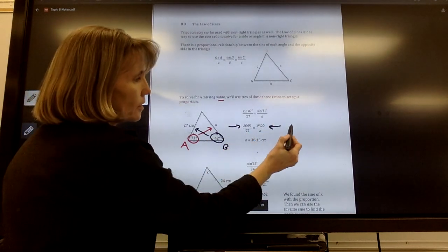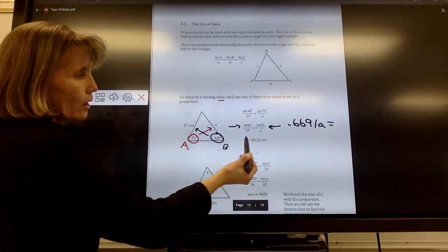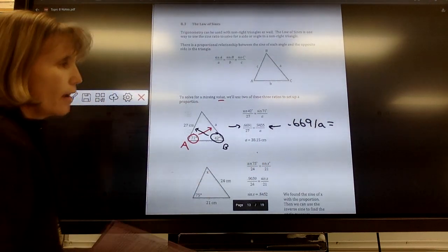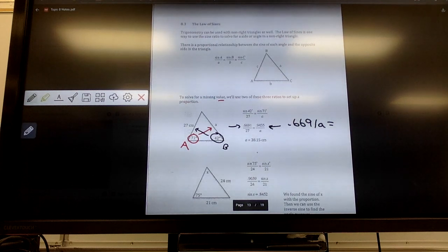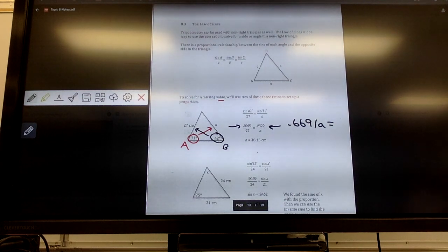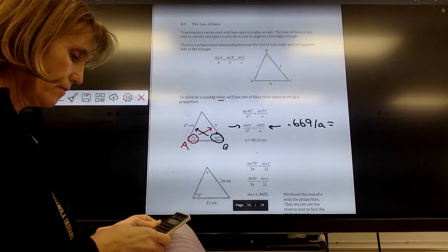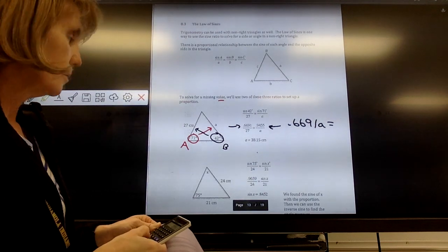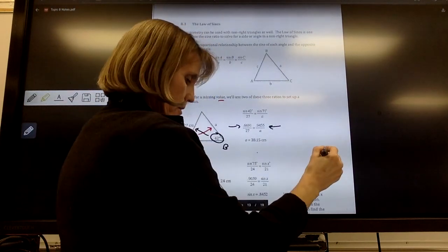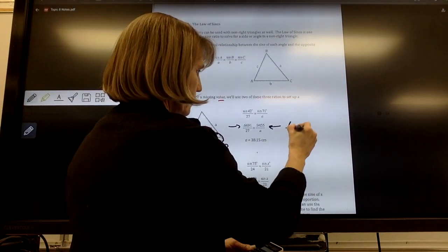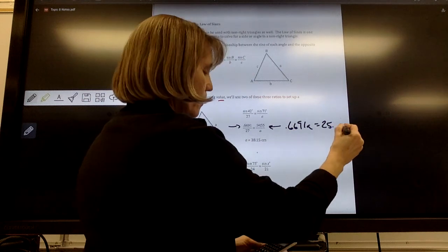Once you have those, you're going to do cross products to solve. So when I take this product, I'm going to get 0.6691 times A equals, and then I need to get this product right here. So 0.94, let me go grab a calculator. I want to take that decimal, 0.9455, and I want to take that times 27, equals, and I get this decimal. So I've got 0.6691 A equals 25.5285.